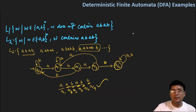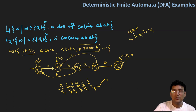Let's take a string that should be rejected — a string not containing 'abab'. Let's say 'aab'. Starting from q0, with 'a' you reach q1, with the next 'a' you remain at q1, with 'b' you reach q2, which is a non-final state, so the string is rejected. This is working very fine.